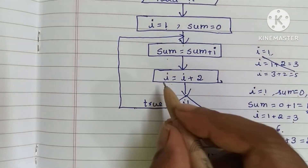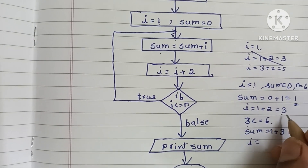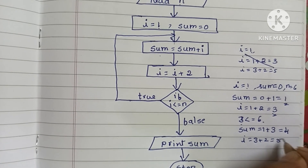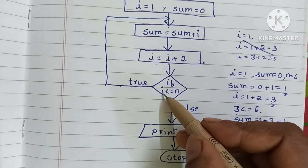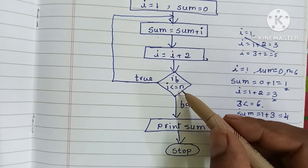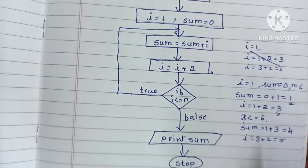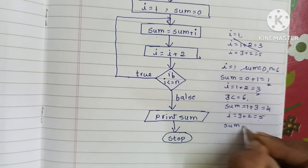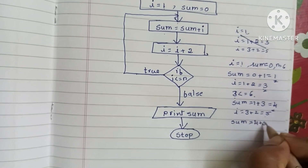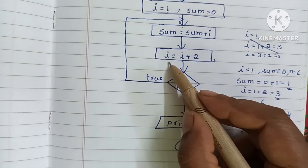Next we increment i: i = 3 + 2 = 5. We check if i is less than or equal to N: i is 5, and 5 is less than or equal to 6 — yes, this condition is true. We go to the sum process: sum = sum + i = 4 + 5 = 9.